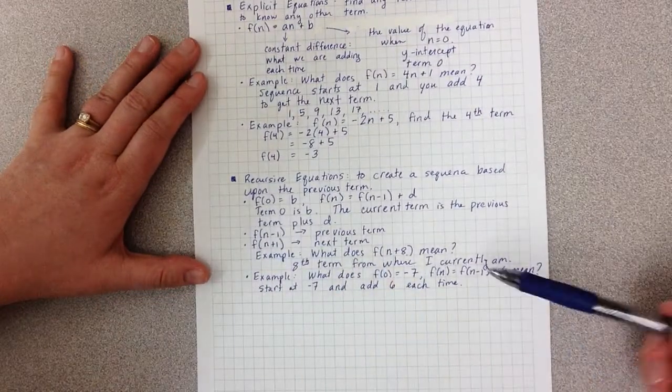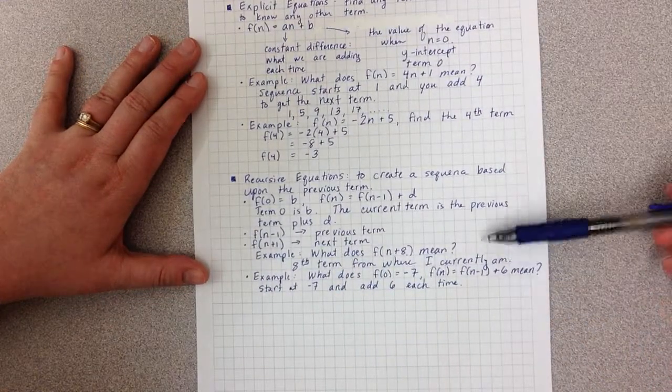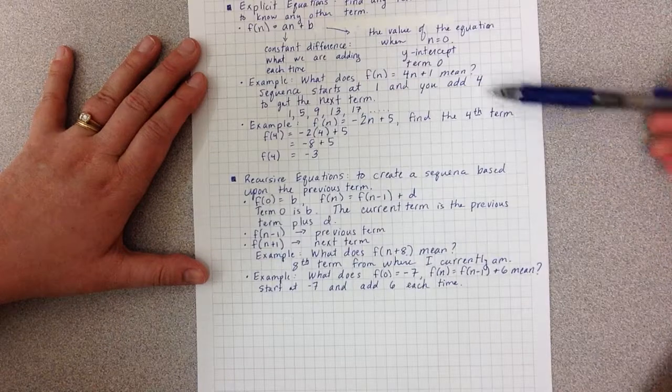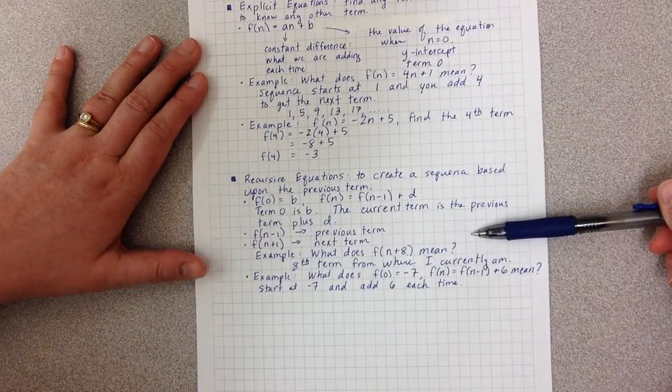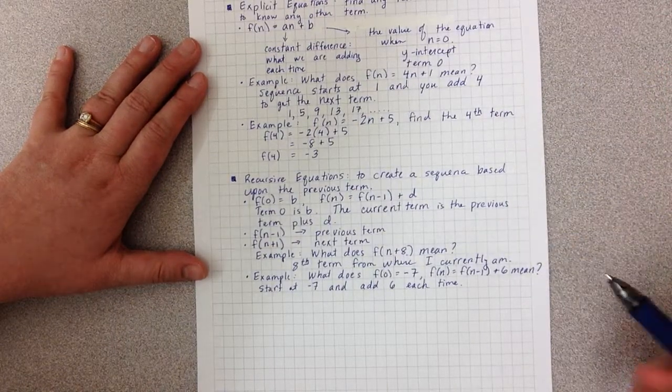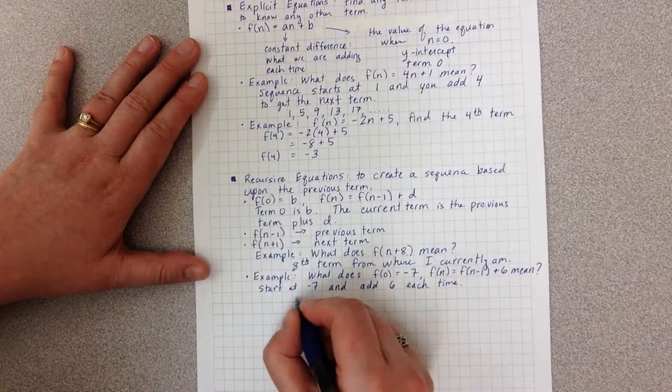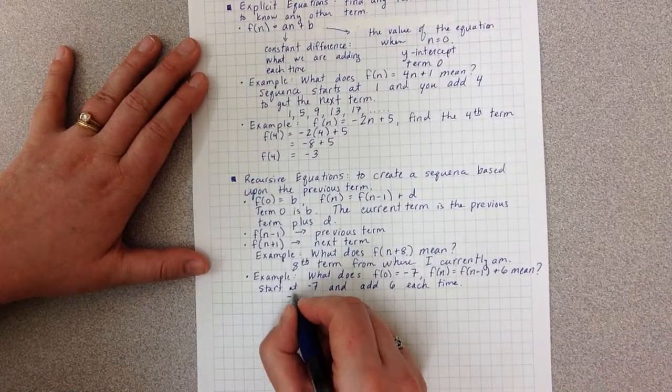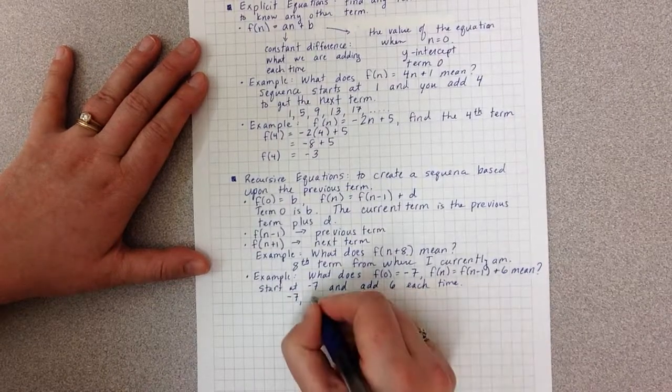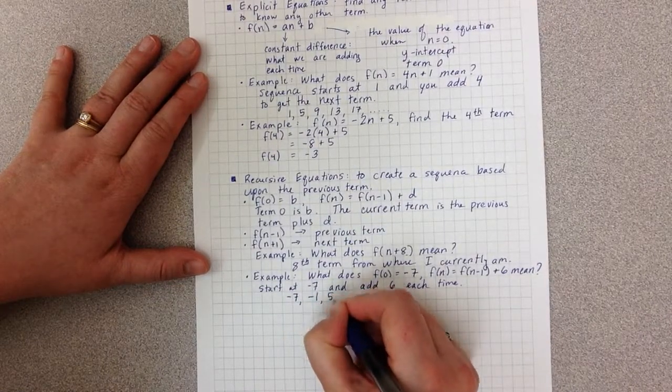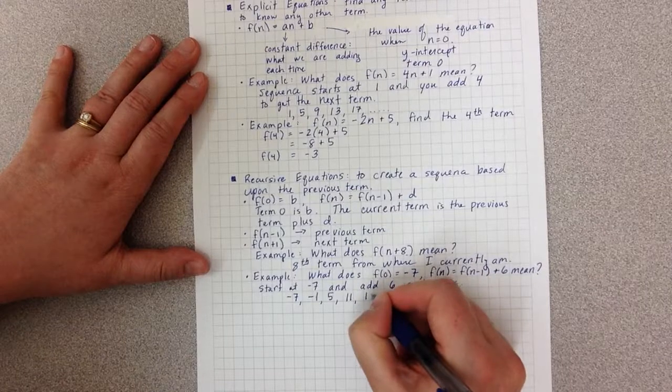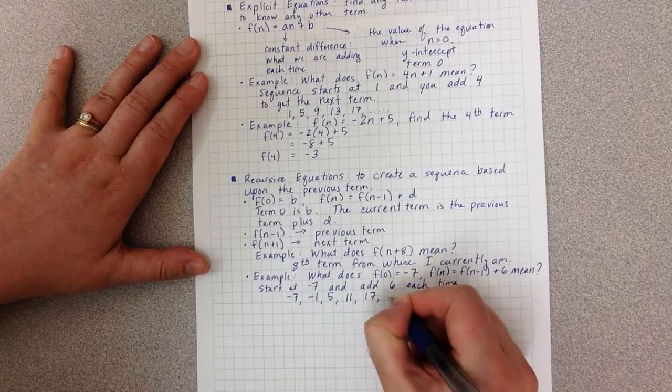So this means that I start at negative 7 and add 6 each time. So the meaning of these two representations is the same. It's just a matter of the way that they are communicating that information. So if I start at negative 7 and I add 6 each time.